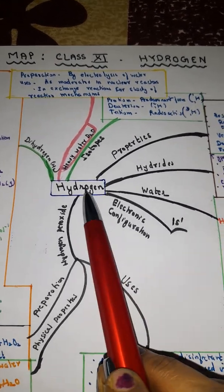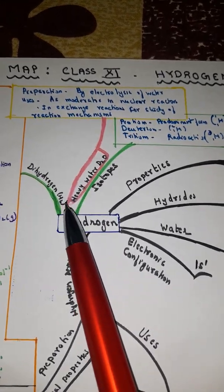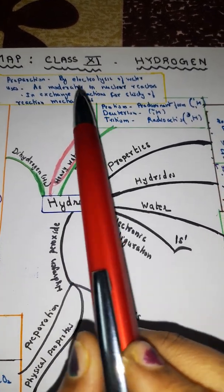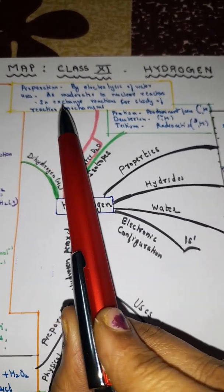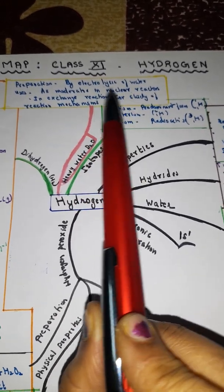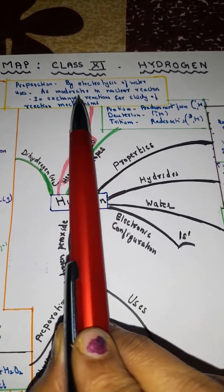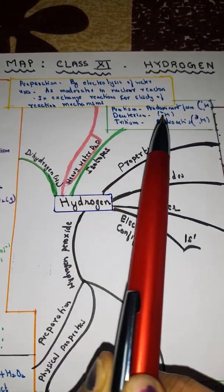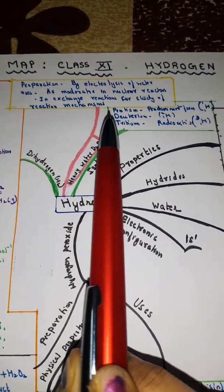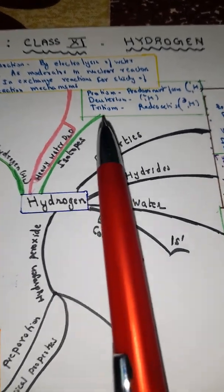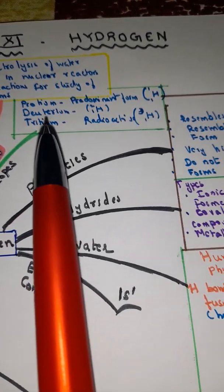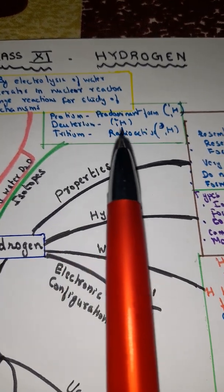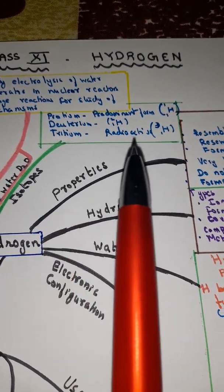Here you can see heavy water D2O. The preparation is by electrolysis of water and uses are given as moderator in nuclear reaction, in exchange reactions for study of reaction mechanisms. The isotopes of hydrogen are protium, the predominant form ¹H; deuterium ²H; and tritium, the radioactive isotope ³H.